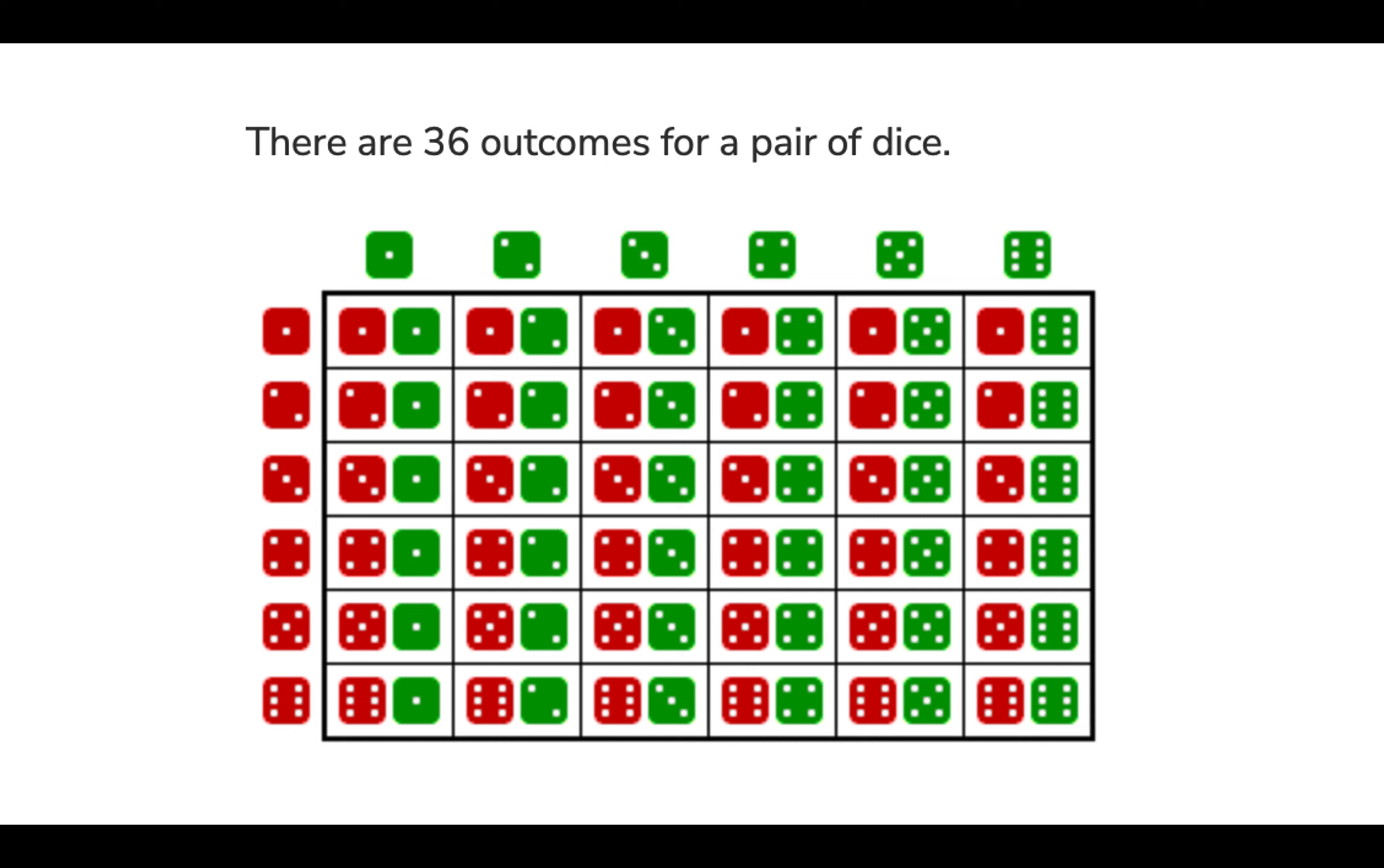Whereas the probability of rolling a double would be one in 36 for a specific double, but any double would actually be one in six, so every six rolls you should be rolling a double.